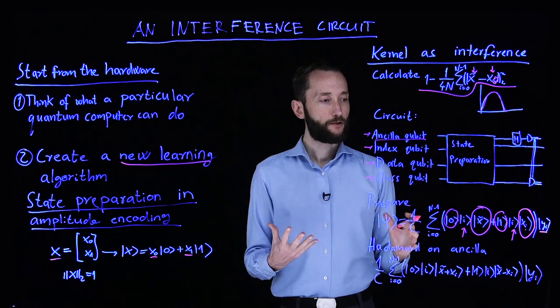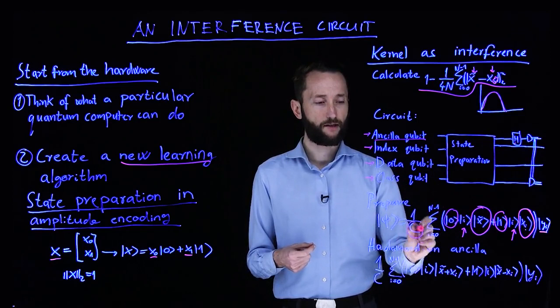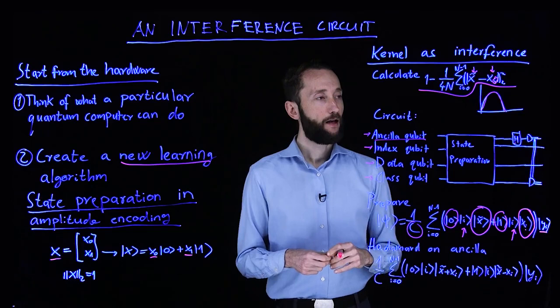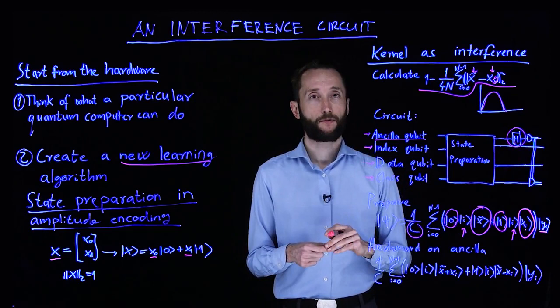And to finish it off, we also have the class qubit corresponding to the data instances. So we can think of it as a big black box that does all this preparation, plus we have some normalization constant to take care that the superposition is actually a quantum state. And what we are doing next is nothing but this Hadamard operation here.